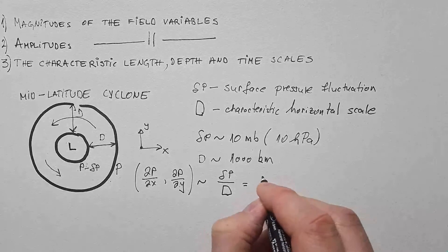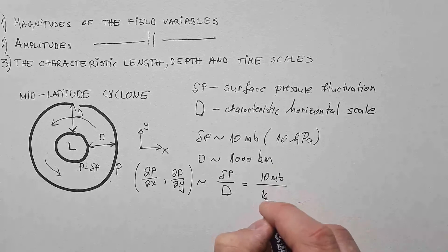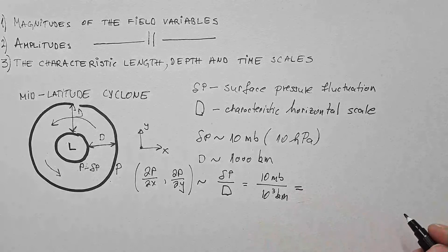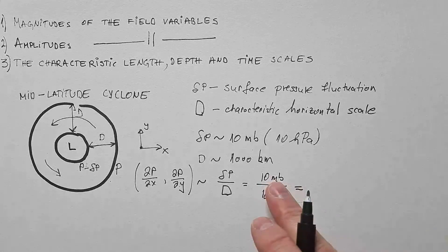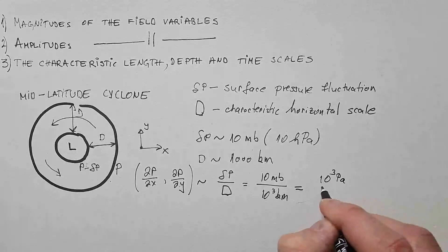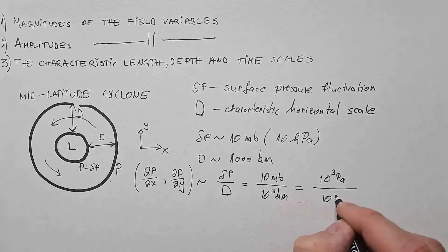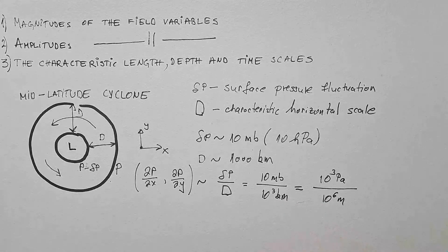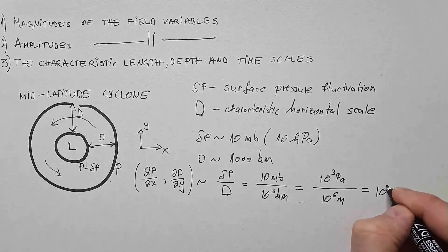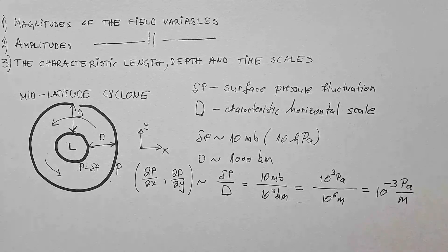Delta P is change of pressure. And we said it's about 10 millibars over this horizontal distance D, which is 1000 kilometers. So I say this is 10 millibars over 10 to power 3 kilometers. And this should be 10 to power 3 pascals.